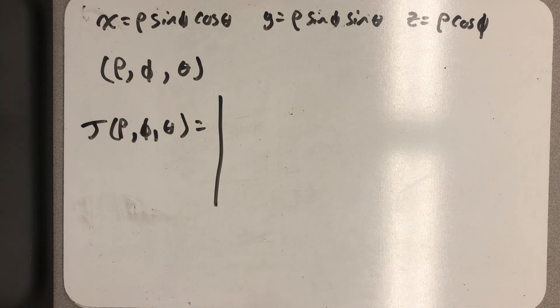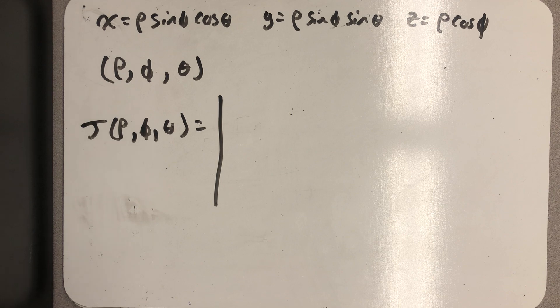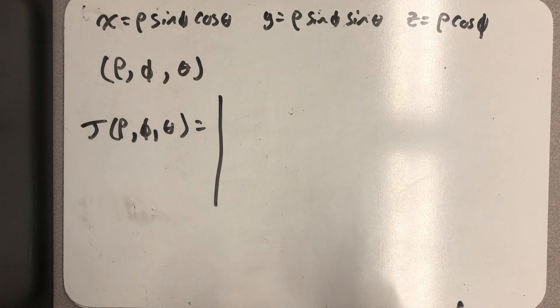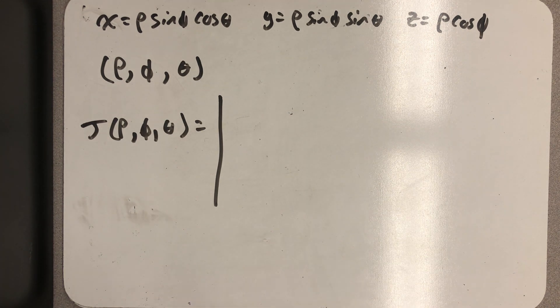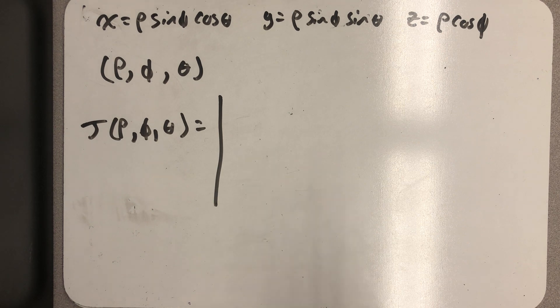And we know what we're supposed to get, which is really nice. In the end, I know I'm supposed to get rho squared sine phi, because I already know that extra factor for dV when I convert a triple integral from rectangular to spherical coordinates.